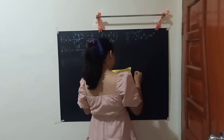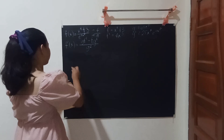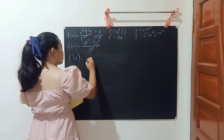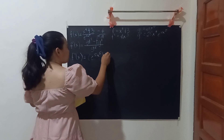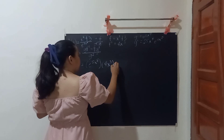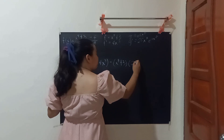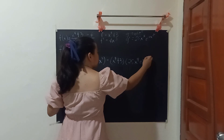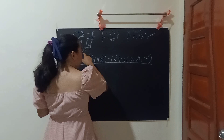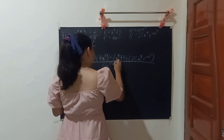Let's go ahead and apply this formula. g, which is e^(5x⁵), times f prime, which is 4x cubed, minus f, which is (x to the fourth power plus 3), times g prime, which is 25x to the fourth power times e^(5x⁵), over g squared, which is e^(5x⁵) squared.